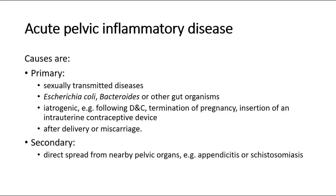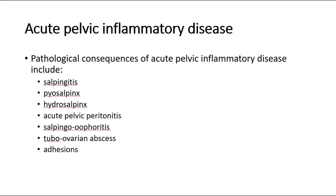Secondary causes can be due to direct spread from nearby pelvic organs, such as in appendicitis or schistosomiasis. Pathological consequences of acute pelvic inflammatory disease include salpingitis, piosalpinx, hydrosalpinx, acute pelvic peritonitis, salpingo-oophoritis, tubo-ovarian abscess, and adhesions.